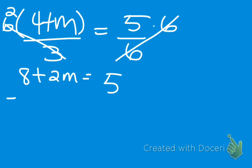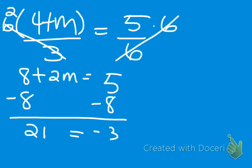Then you subtract 8. Yes. Oh, I need to calculate there. Oh, wait, no, I don't. Negative 3? Yeah, uh-huh. Equals 2m, divide by 2, divide by 2.